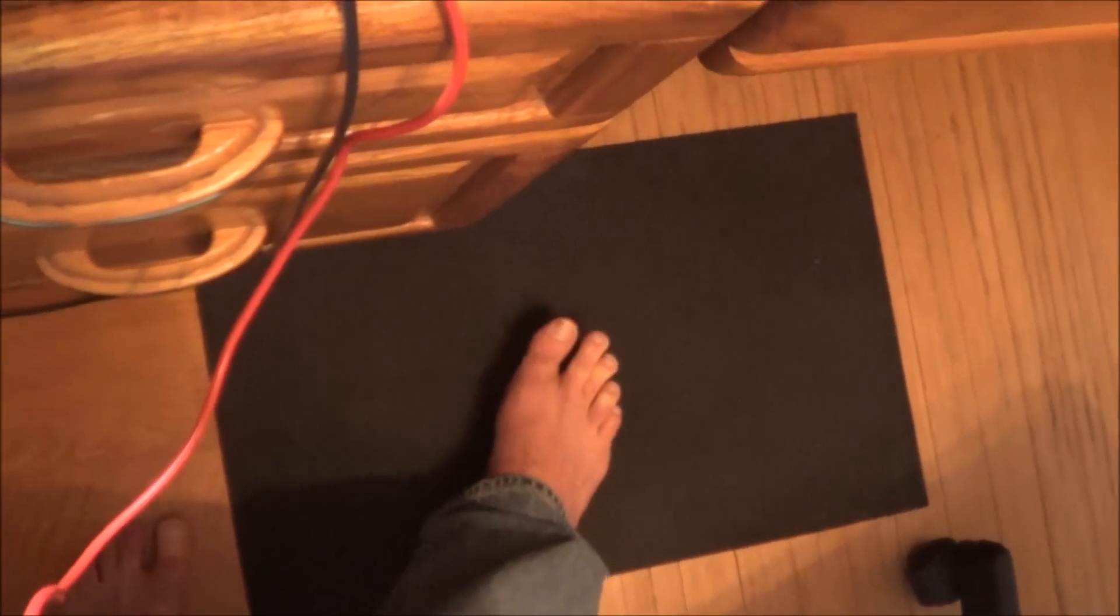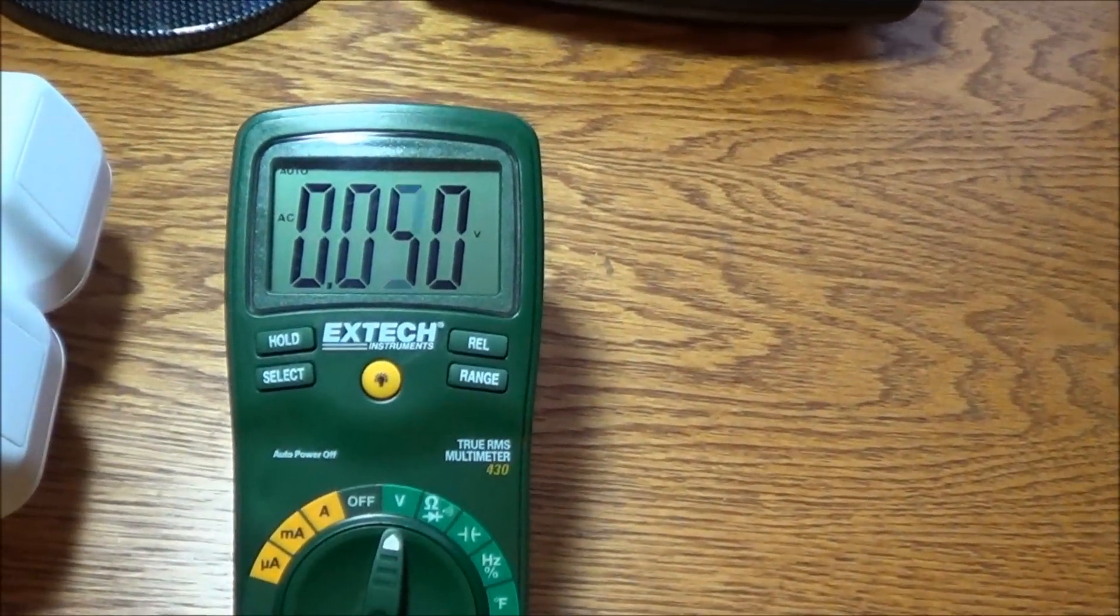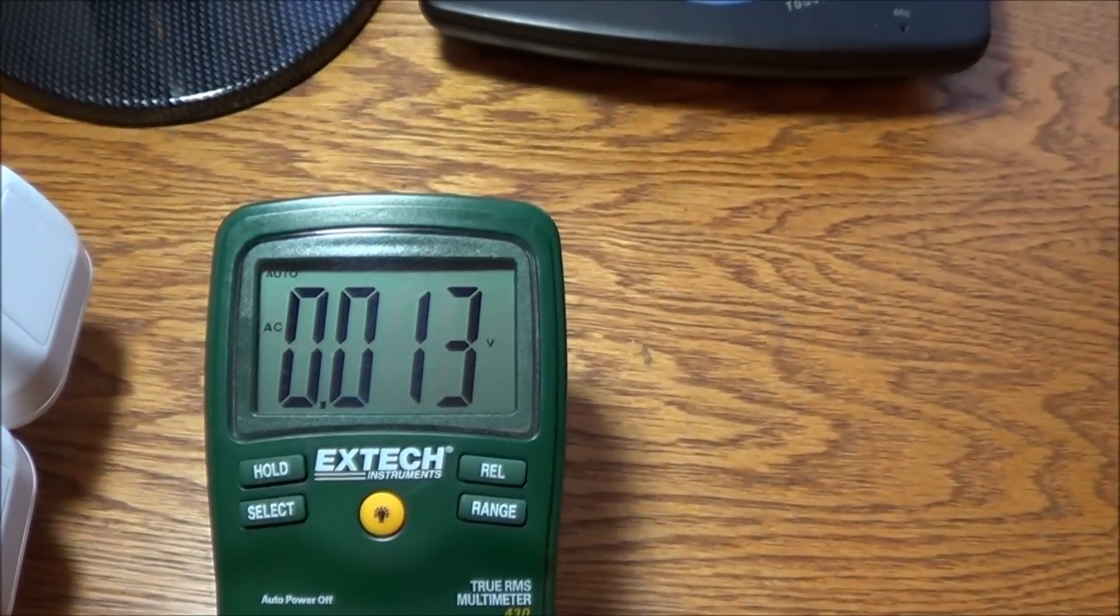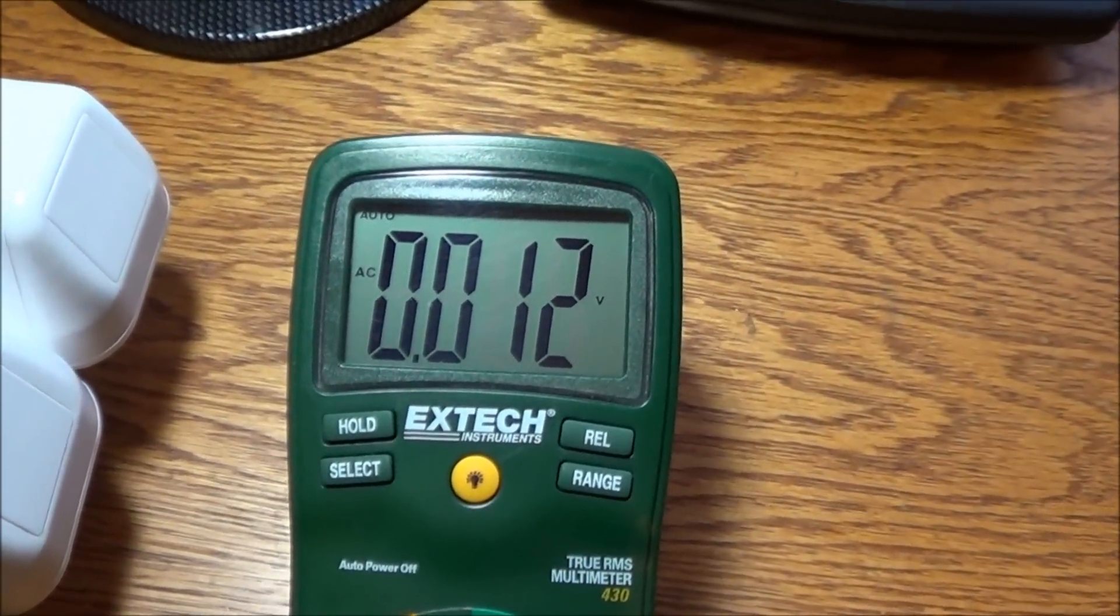And now, right down here, I'm just going to step on the grounding pad and watch what happens when I step down on it. Immediately, the electrical fields are grounded out of my body, and my body voltage is at only 12 millivolts.